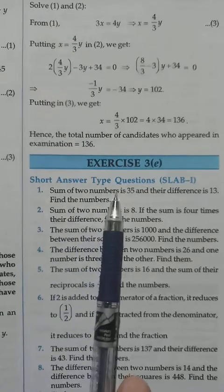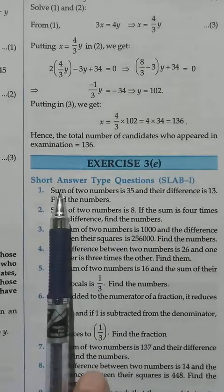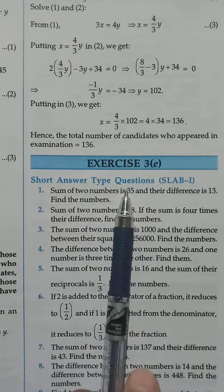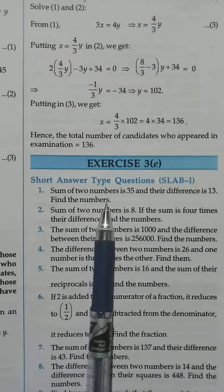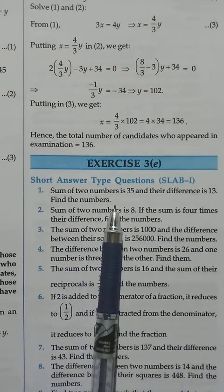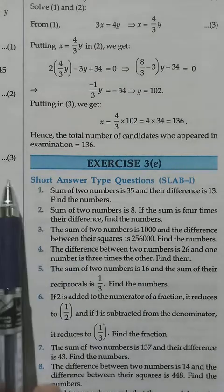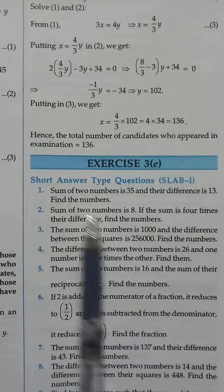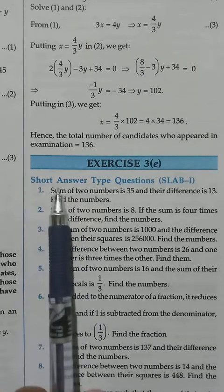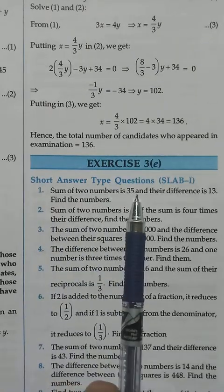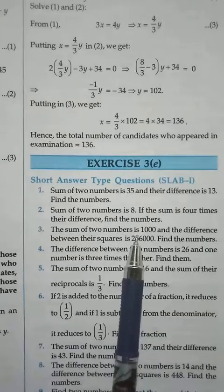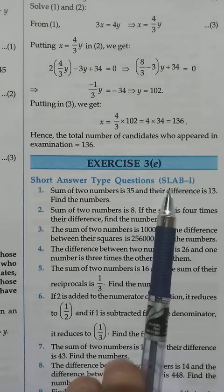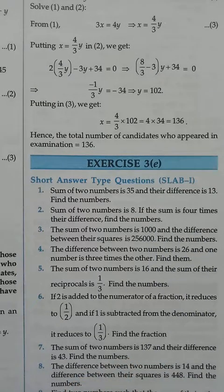Problem 1: The sum of two numbers is 35, and their difference is 13. We have to find the two numbers. We take the first number as x and the second as y. When we add them, x plus y equals 35 — that's equation 1. Assuming x is greater than y, x minus y equals 13 — that's equation 2.